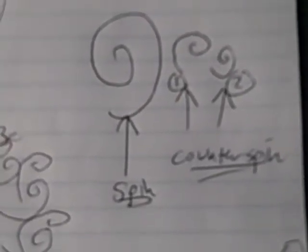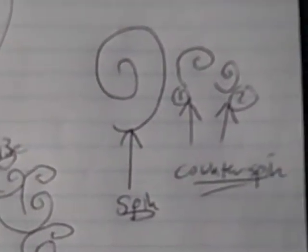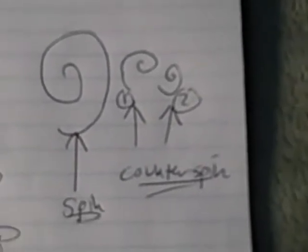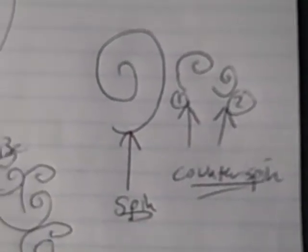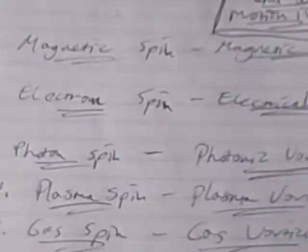Now what I've drawn here is a diagram just to simplify it. What you have is spin, which is this big anti-clockwise spin right here. Then you have a smaller number one and number two, a smaller counter spin and then a smaller counter spin again. And so this is how all the forces in everything work.